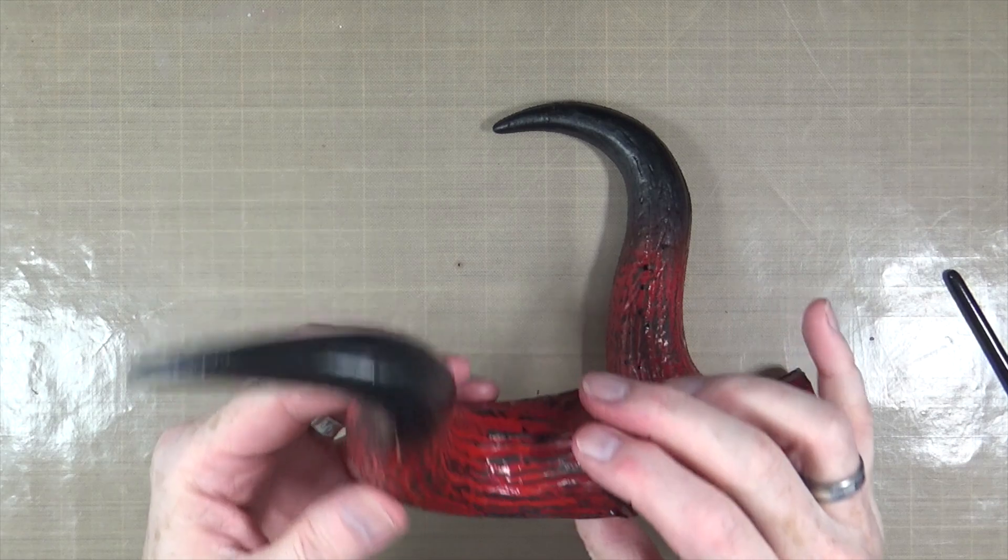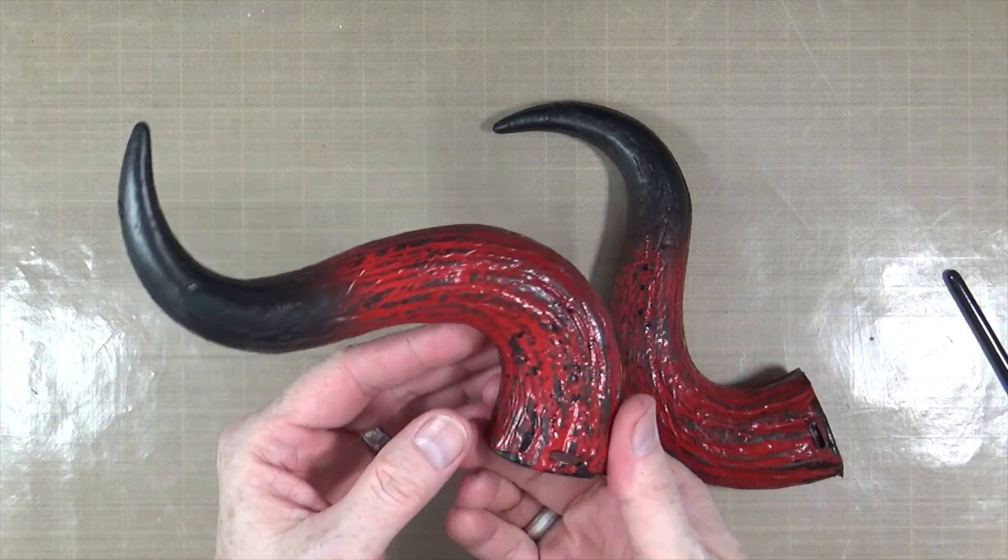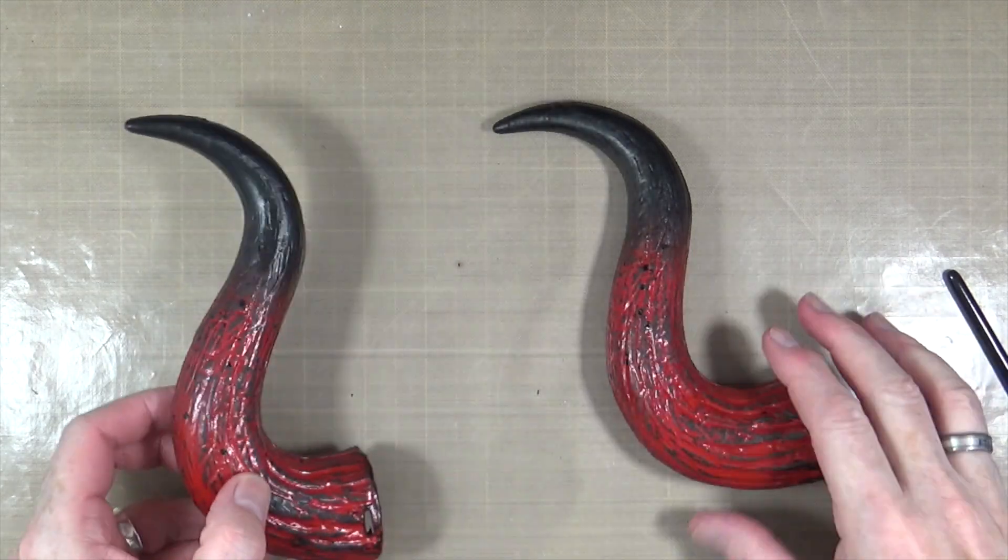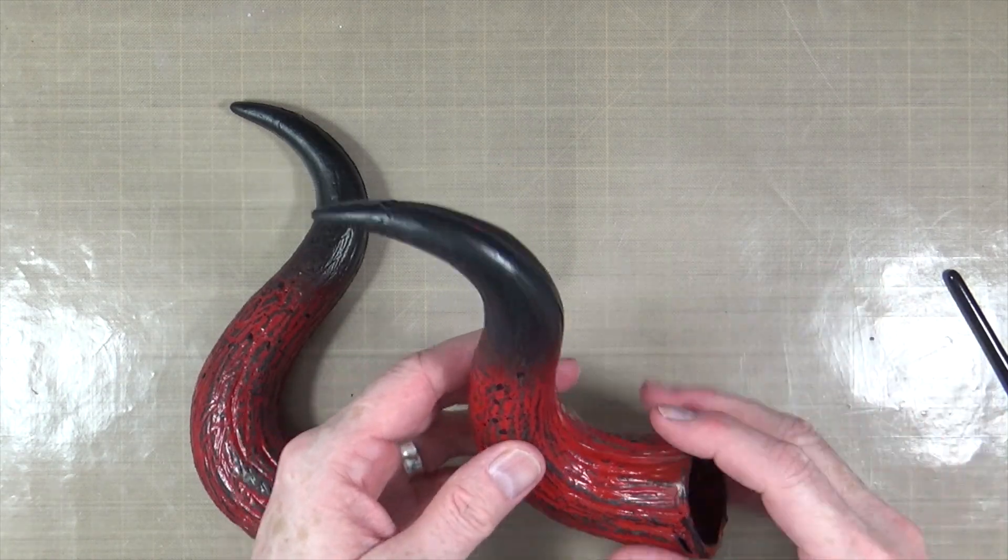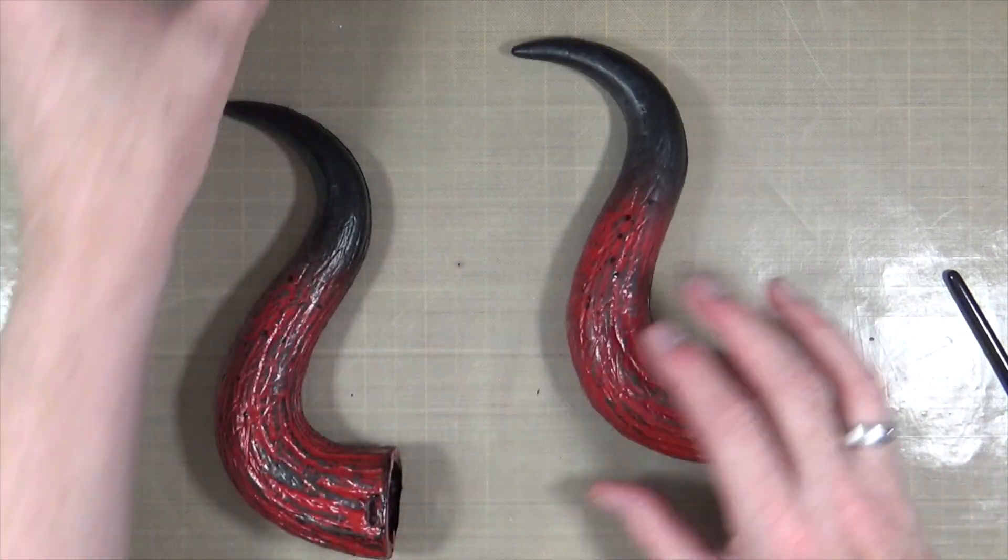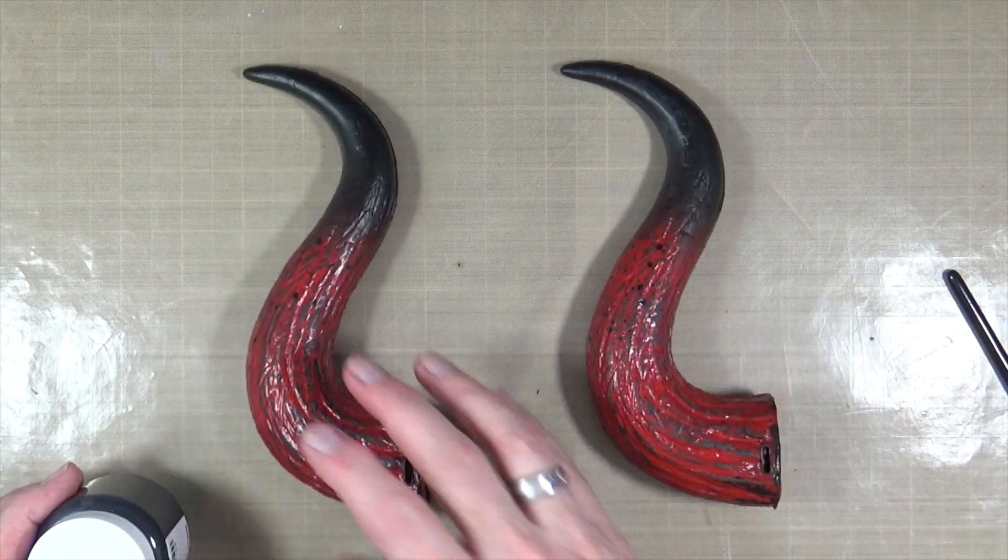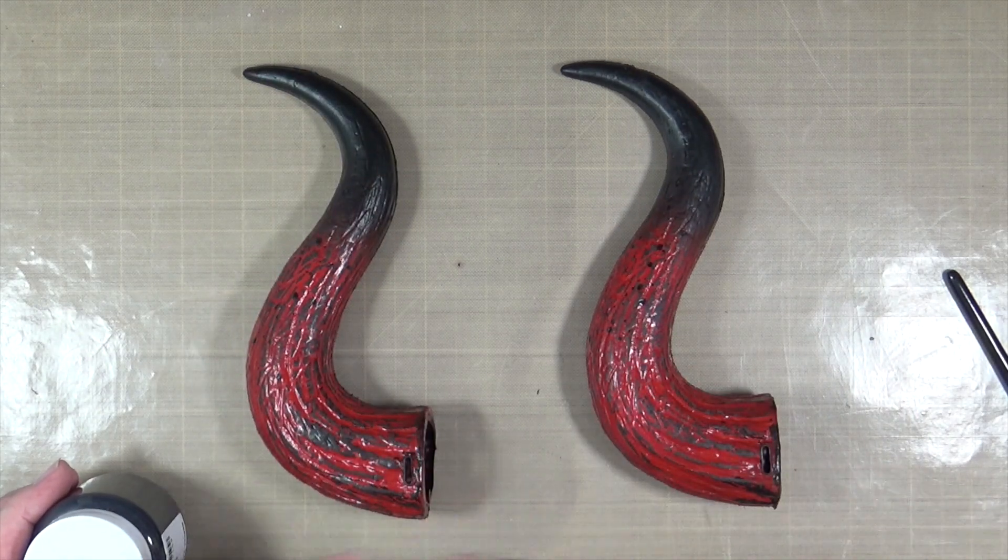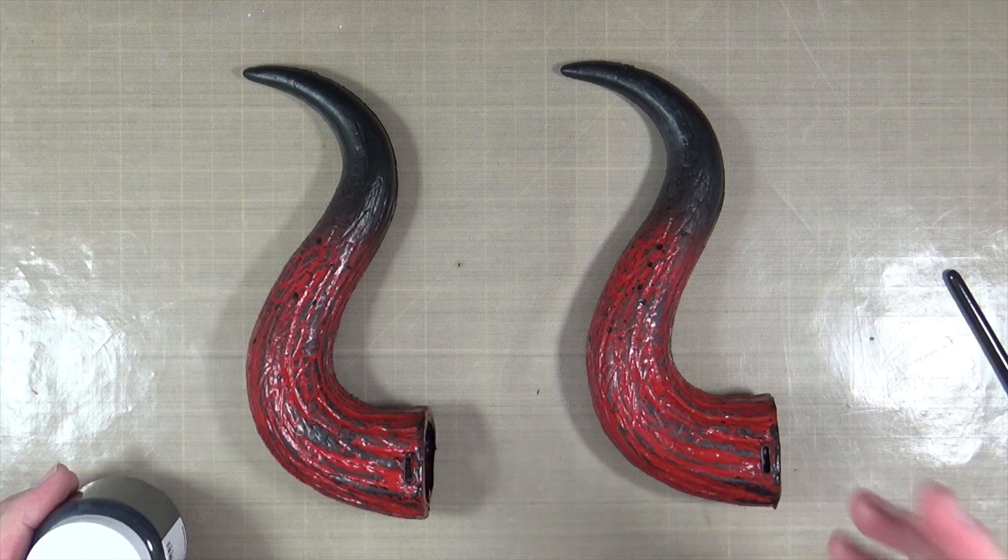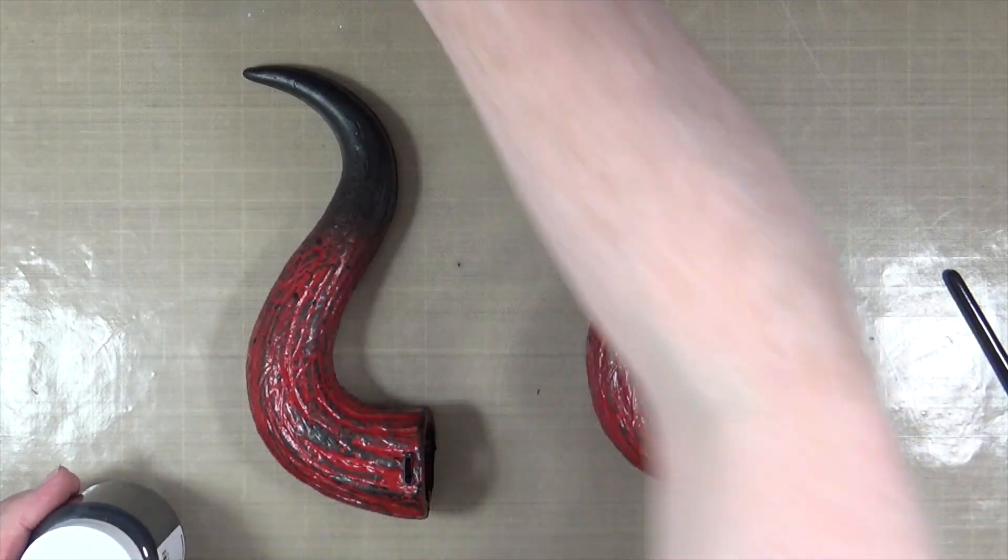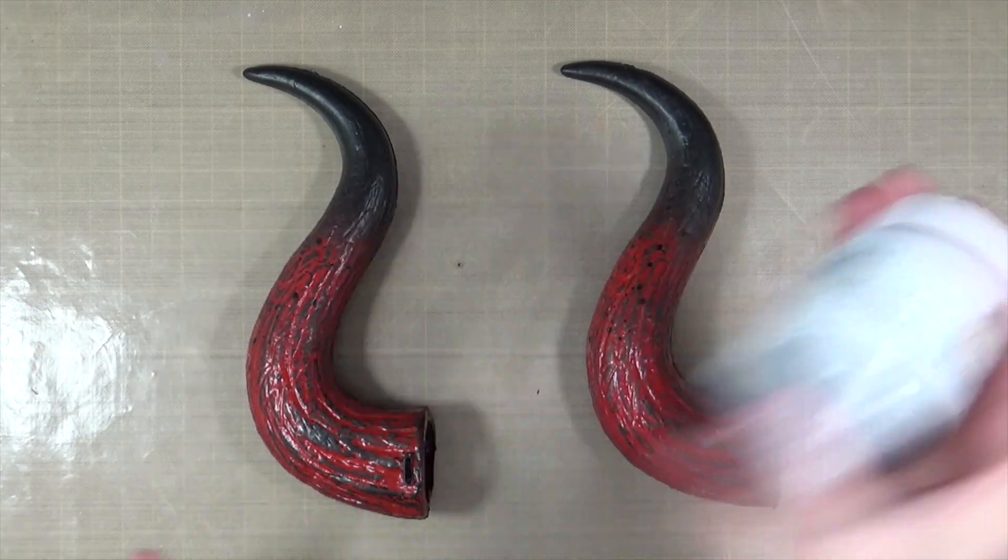Okay, so these have now been sanded down and then cleaned and then dried again. So I've removed most of the flaking paint which is perfect. So now I want to give them a primer coat.